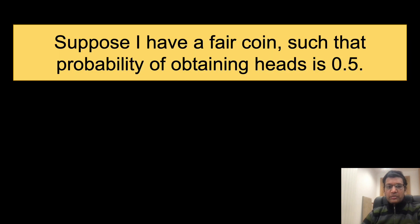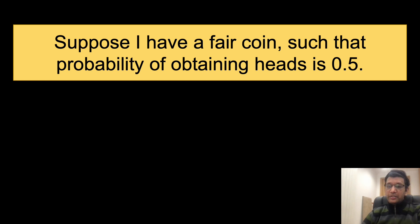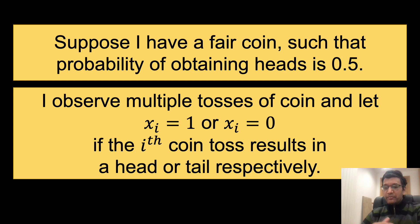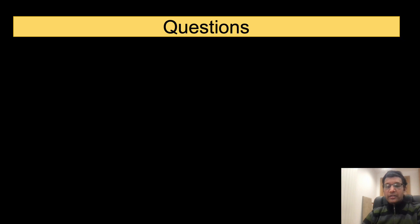Let us move to the question. We first define the setting of the problem. Suppose I have a fair coin such that the probability of obtaining heads is 0.5. I perform multiple tosses of the coin and observe whether the ith toss resulted in a head or a tail. With the ith toss, I associate a random variable x sub i such that it is 1 when we observe a heads and 0 when we observe a tail. Under this setting, let us ask three questions.